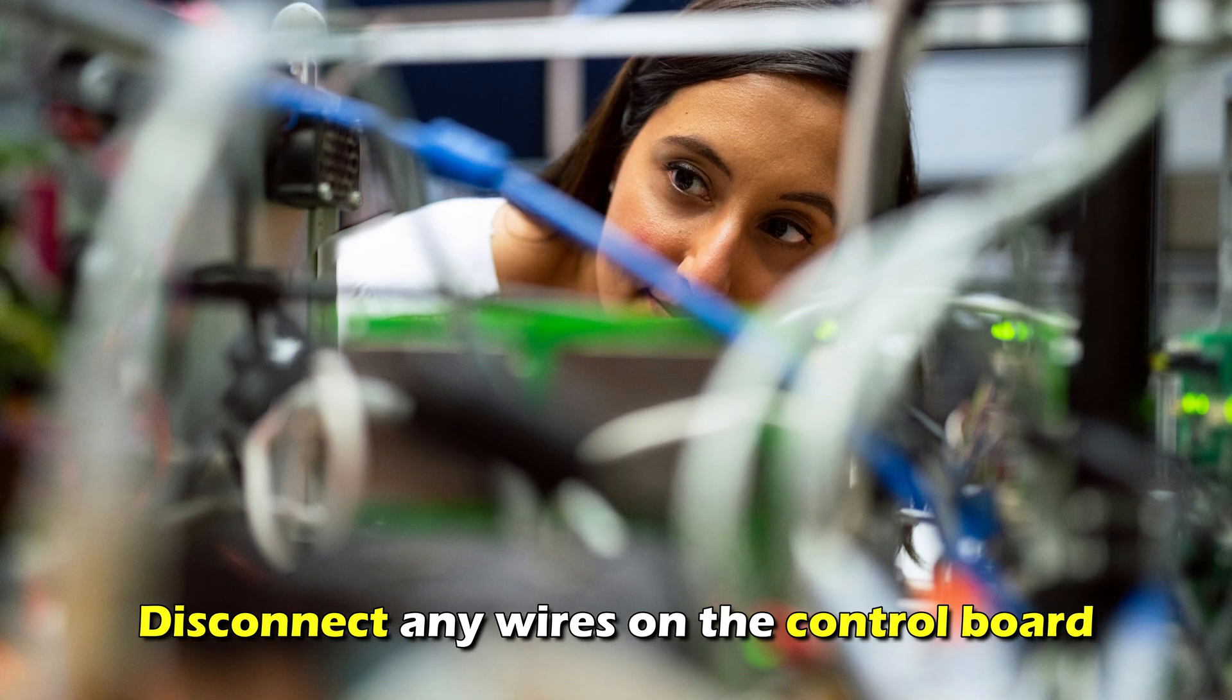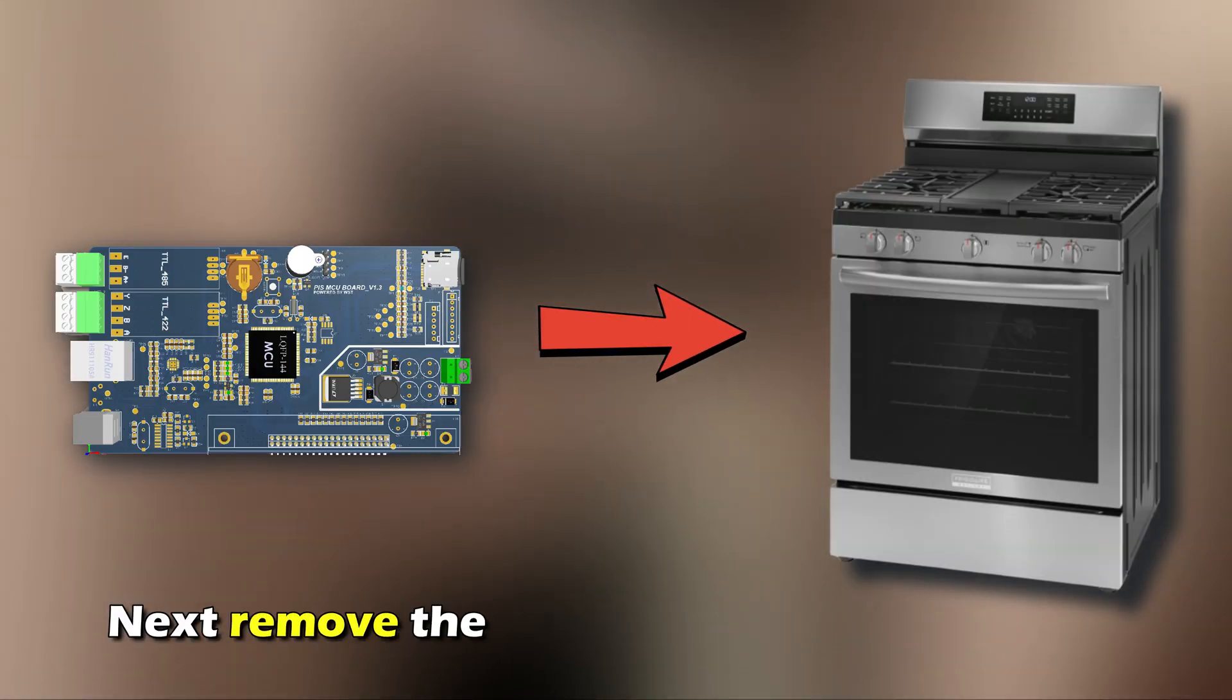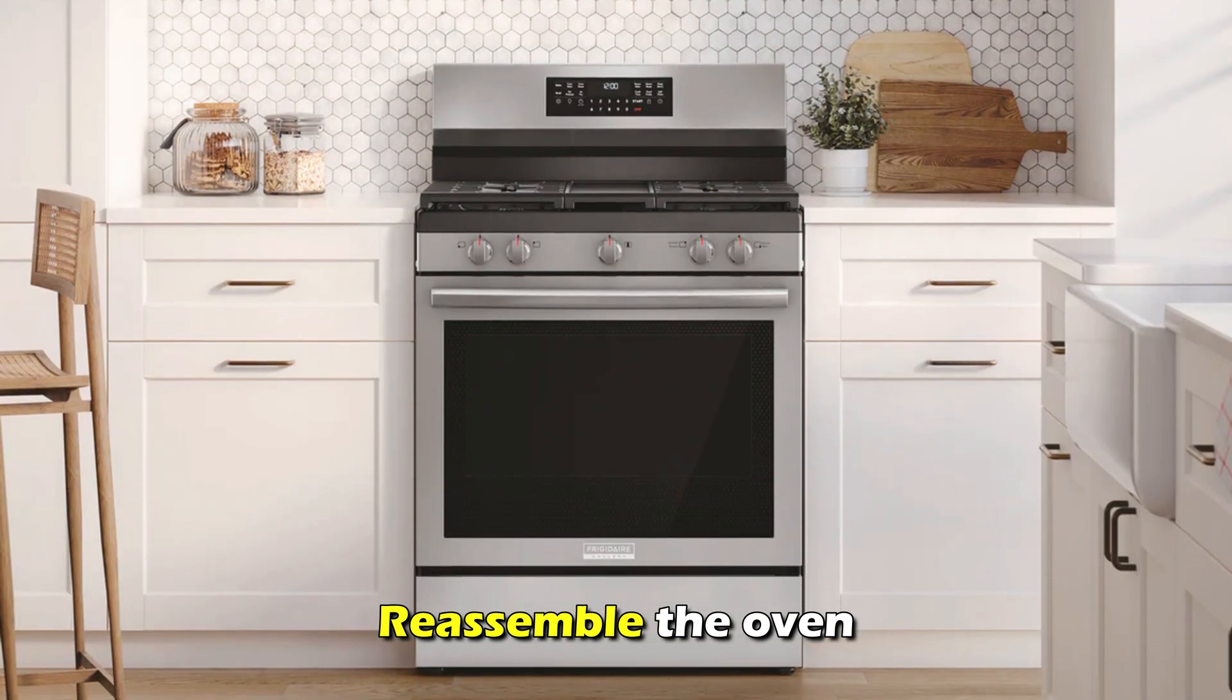Disconnect any wires on the control board. Next, remove the board and install a new one. Reassemble the oven. And that's it. Thanks for watching. Till next time.